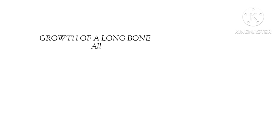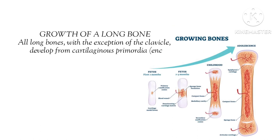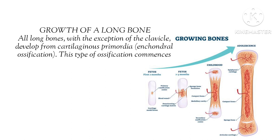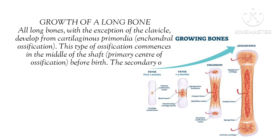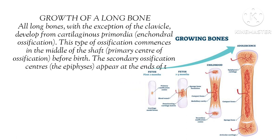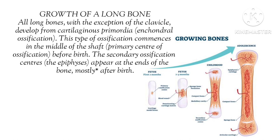The growth of a long bone follows a standard process called endochondral ossification, with the exception of the clavicle. In intrauterine life, bones exist as cartilage. These cartilages then undergo calcification and ossification, converting chondrocytes into osteocytes. Ossification starts from the primary ossification center, which is located in the center of the diaphysis and develops during intrauterine life. The secondary ossification center develops after birth.